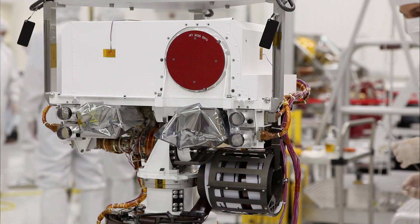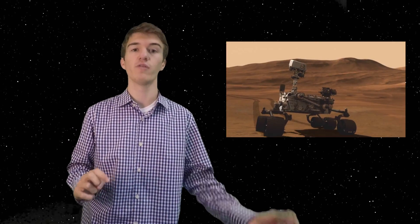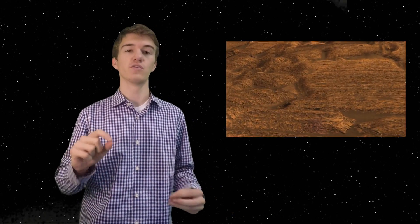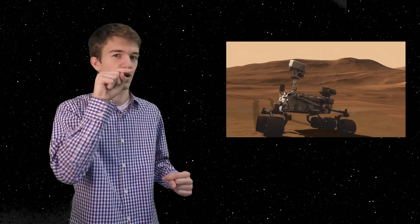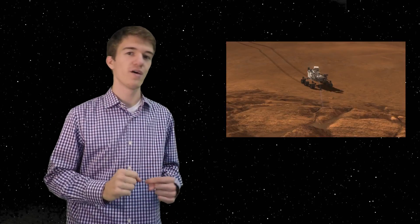The last instrument I want to talk about is the chem cam, or laser spectrometer. At the top where the mast cam is located, there's also the chem cam. What this does is it looks at different rocks within a small range of Curiosity, and instead of having to go over and drill into it with a drill bit, it can use a small laser to pinpoint that rock and shoot the laser right at the rock.